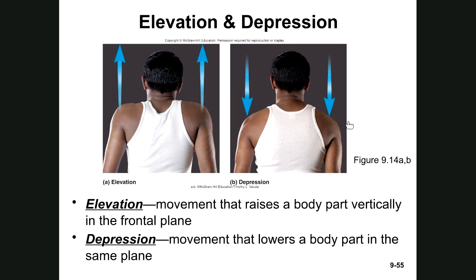Elevation is the superior movement of a body part — examples include the superior movement of the mandible when closing the mouth and raising the shoulder superiorly. Depression is the opposite — the inferior movement of a body part — such as opening the mouth to chew food and moving the shoulder inferiorly.